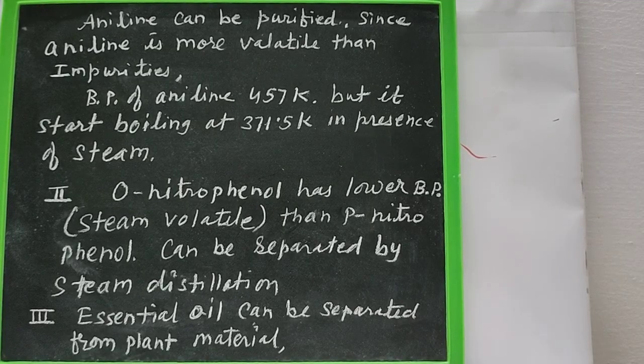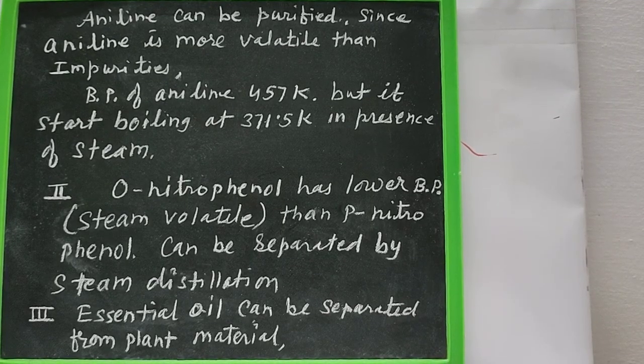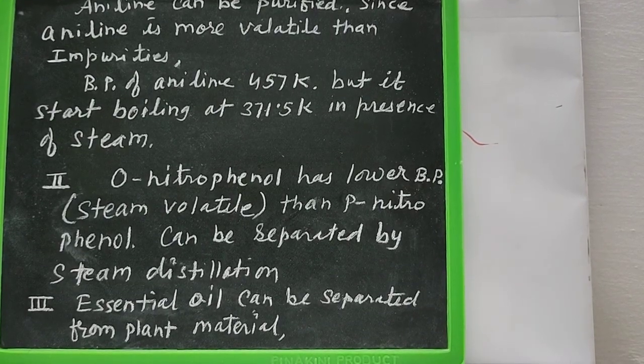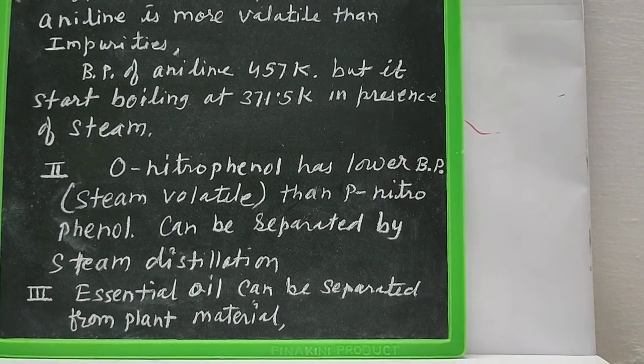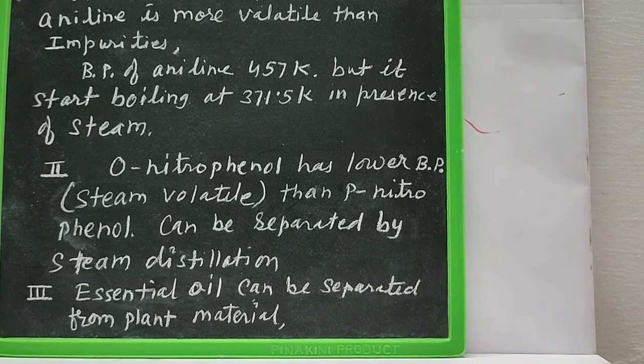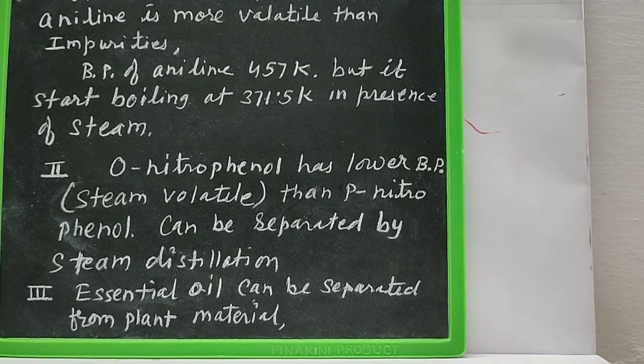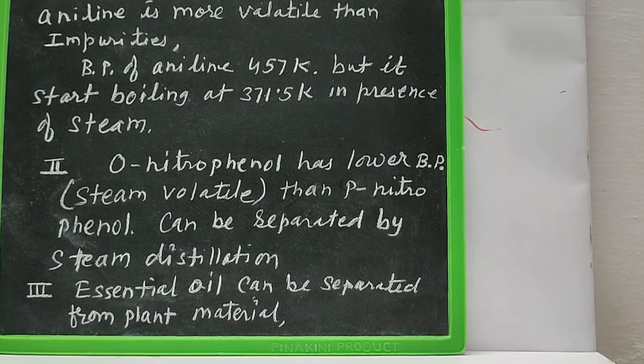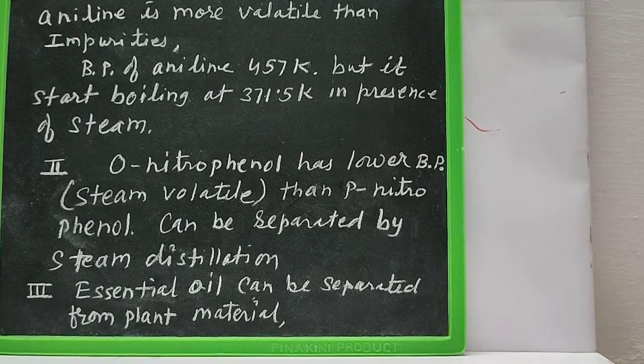Aniline can be purified by steam distillation. Ortho-nitrophenol can be separated from para-nitrophenol by steam distillation. Essential oil can be separated from plant material.